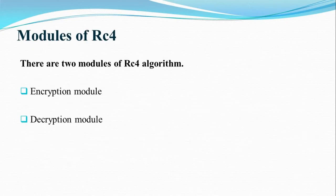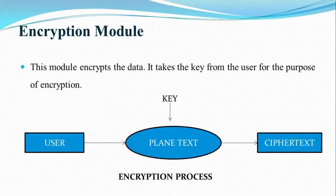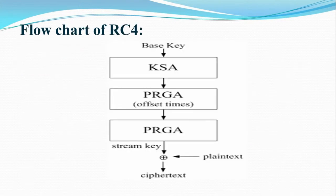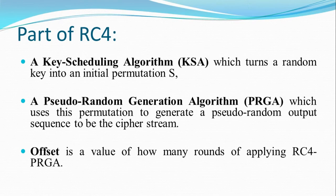There are two types of modules in the RC4 algorithm: the encryption module and the decryption module. In the encryption module, the user encrypts the plaintext with the help of a key — using the RC4 algorithm — and converts it into ciphertext. In the decryption module, the user takes the ciphertext and with the help of the same key, because RC4 is symmetric key encryption, the ciphertext is converted back to plaintext. The flowchart of RC4 shows: base key, KSA, PRGA, offset time, and PRGA, then a stream key is generated which is XOR'd with the plaintext to produce ciphertext. KSA is the Key Scheduling Algorithm and PRGA is the Pseudo Random Generation Algorithm.